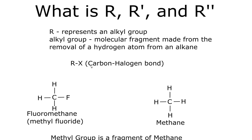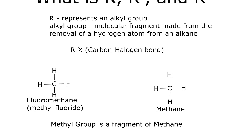Let's look at this example. We have the carbon-halogen bond, where the halogen is represented by X. We have the compound fluoromethane, or methyl fluoride. If we look at the definition for alkyl group — a molecular fragment made from the removal of a hydrogen atom from an alkane — our alkane in this case is methane. We remove a hydrogen, and now we have a methyl group. So here is our R: CH3. That is what our R is in this example.